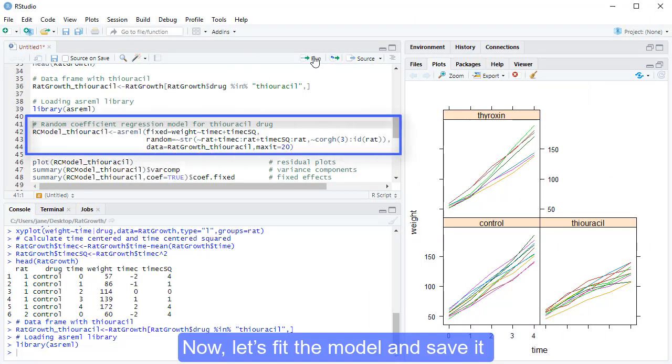You can learn more about how to define the STR function in the ASREML R reference manual. Now, let's fit the model and save it in an object called rcmodel underscore thiouracil.